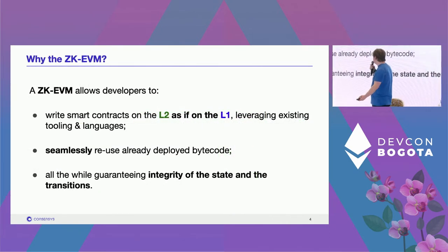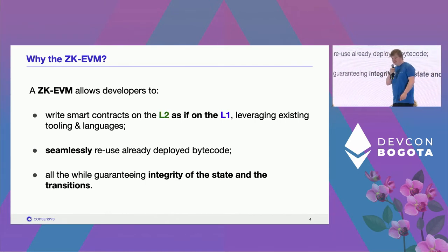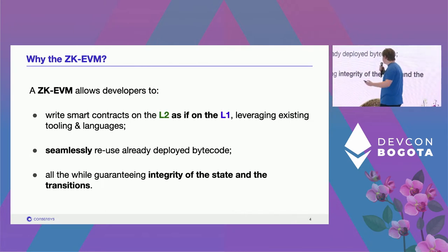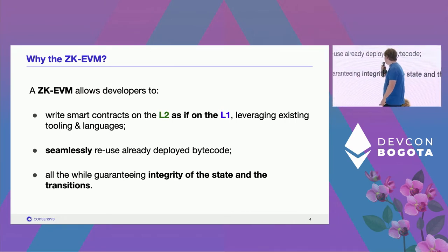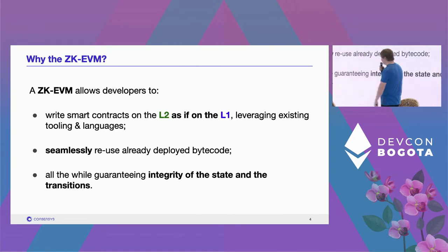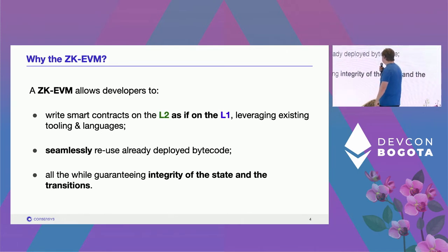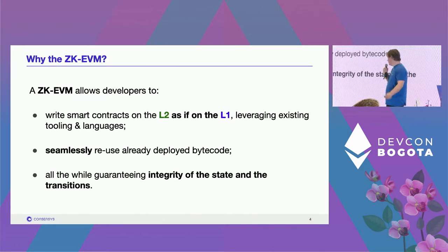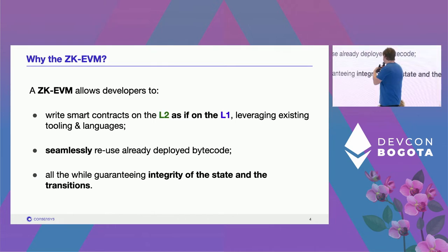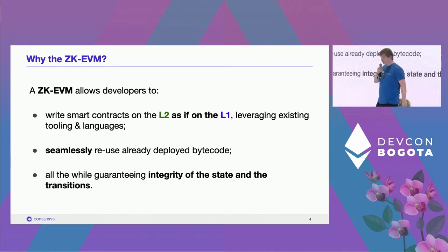Why build a ZK EVM? There are two parts: the ZK and the EVM. The EVM part allows you to reuse all the existing tooling developed for L1. You can write and deploy smart contracts on L2 just as on L1, and redeploy already deployed bytecode onto L2. The ZK part gives you the scalability boost and faster finality, just because there's a proof associated with it.